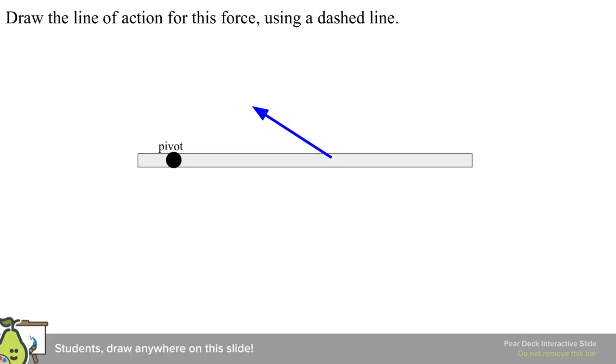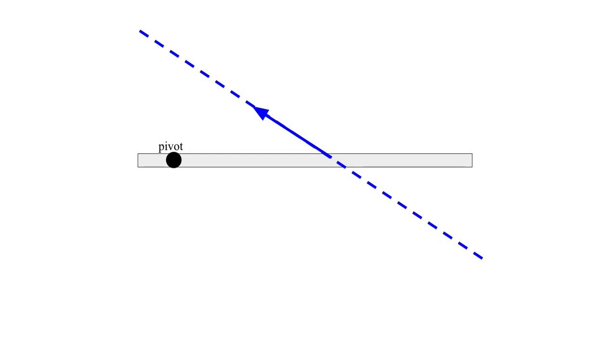So here, just draw the line of action for this force using a dashed line. It is traditional to use the dashed lines, although not necessary. Remember, the line of action is the line in which the force vector lives. The line containing the force vector. So we really just extend it in both directions. And that would be our line of action drawn a little bit more precisely, but same idea.